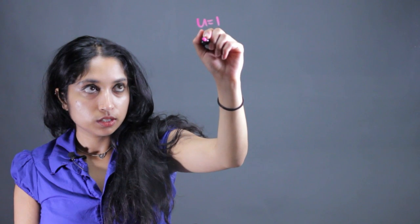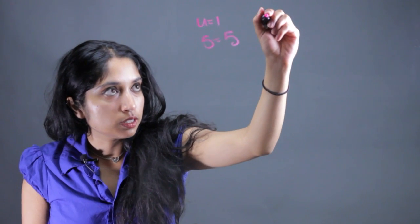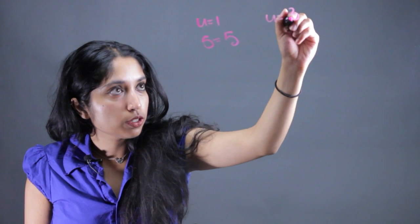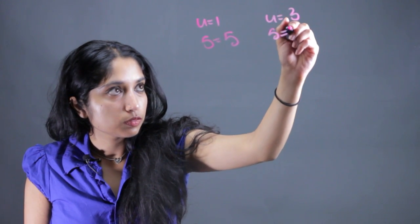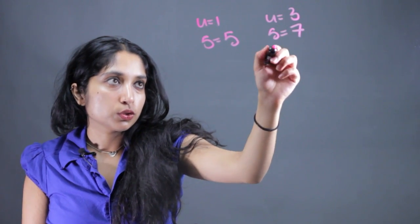So, say for example, they gave you one circle where you had 1 unshaded, which I'm going to denote by U=1, and 5 shaded. The other one, we had 3 unshaded and 7 shaded. And these were in two different circles.